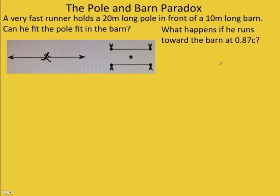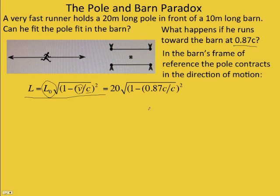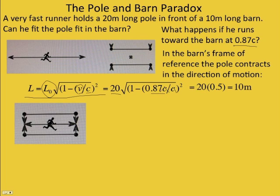So what happens if he runs toward the barn at 87% the speed of light? Well, in the barn's frame of reference, our frame of reference, the pole contracts in the direction of motion. How much? Well, it's given by this equation. L0 is the length we would measure if the pole was at rest to us, or it's the length the runner measures. So that is 20 meters, and V is our velocity, and C is the velocity of light. So if we put in 20 for L0 and 0.87C, the C's cancel, and we get 20 times 0.5. That's why we use 87% C, is this where root factor comes out to 0.5, which is nice and neat. And so we get 10 meters, and so the pole does fit in the barn.